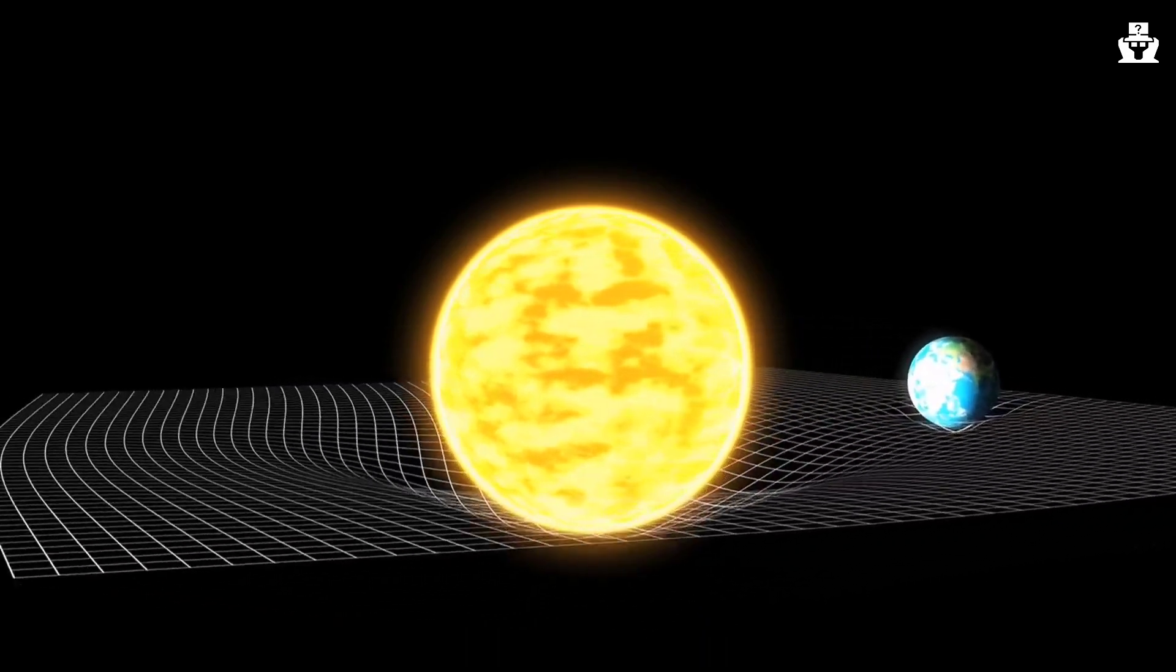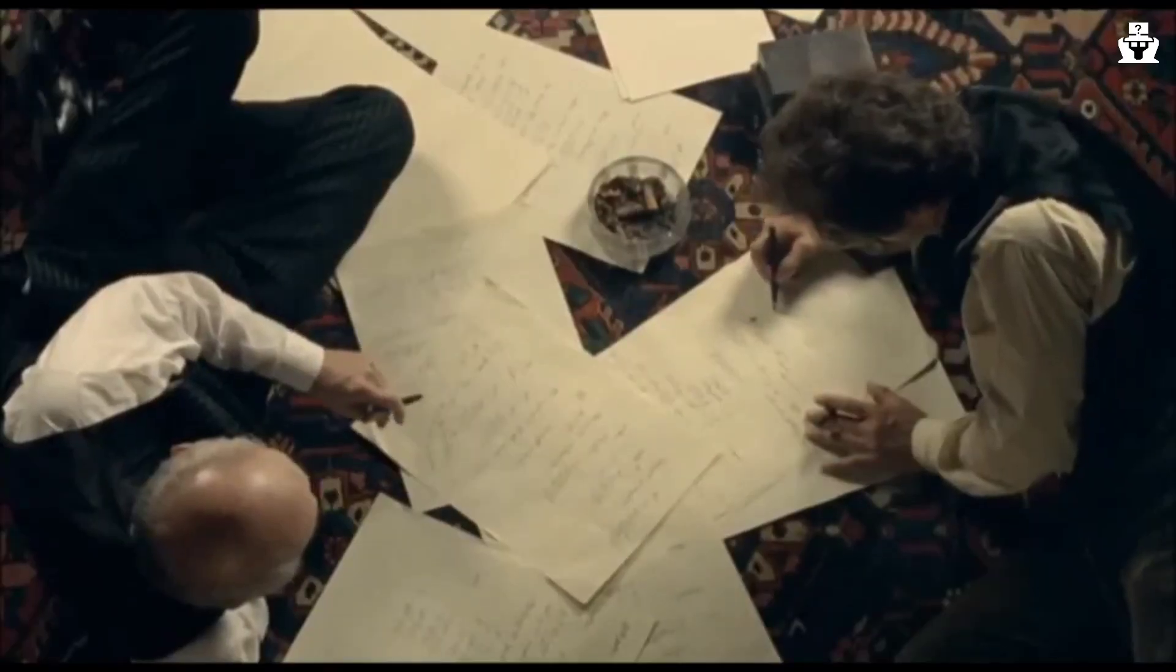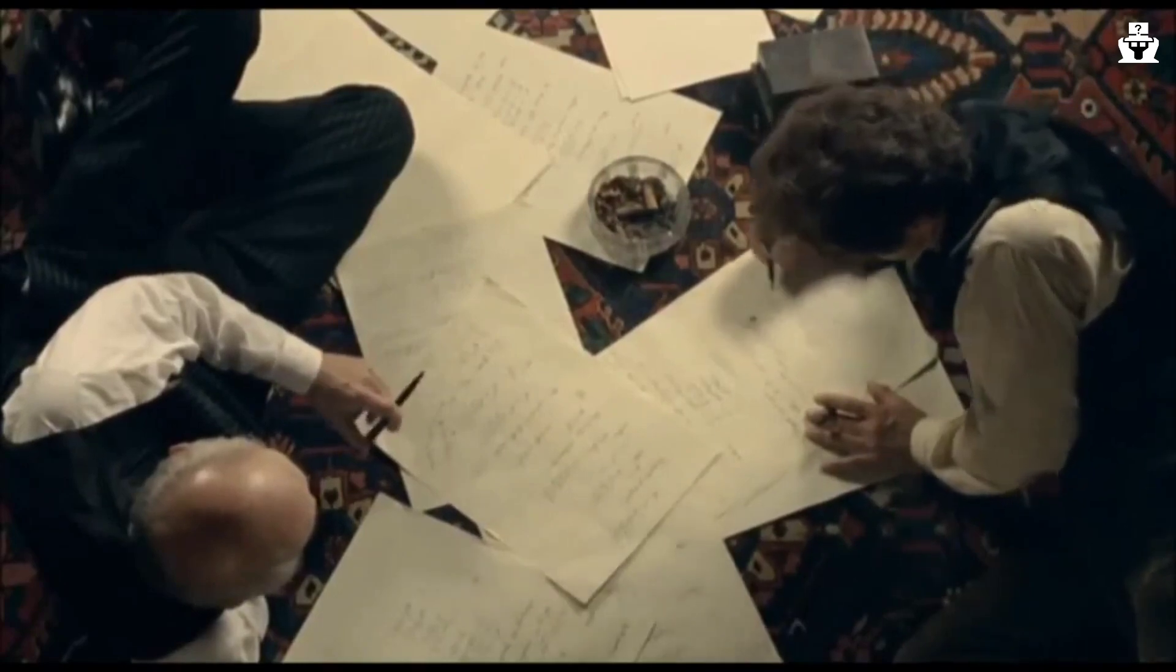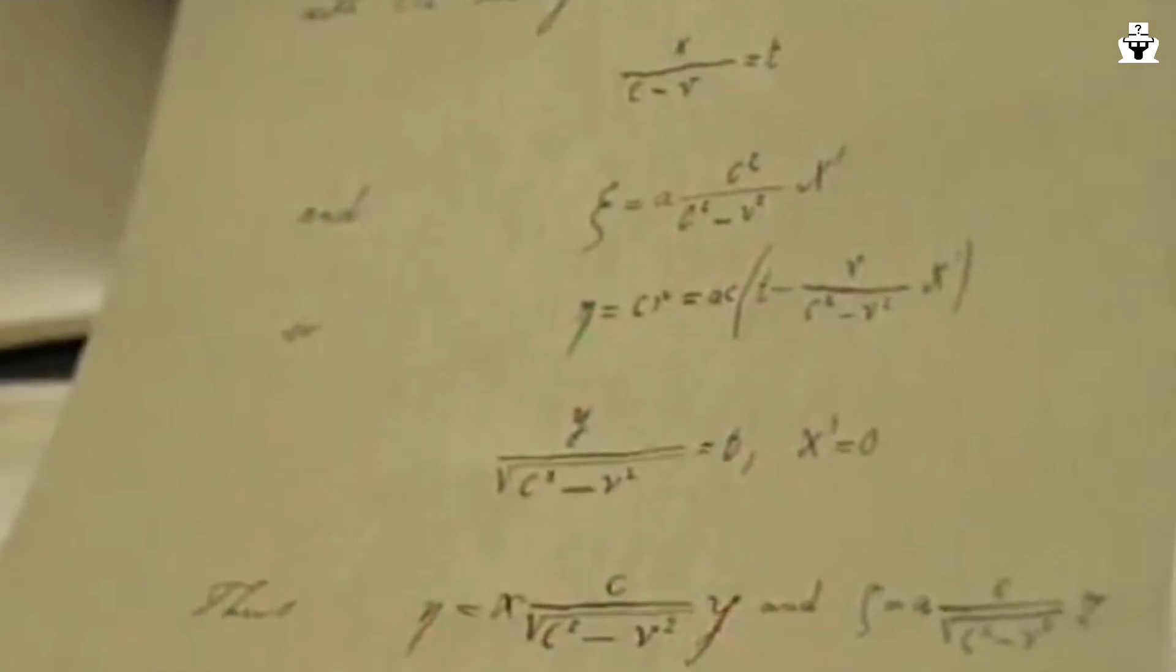However, it was not immediately accepted by the scientific community. Eddington was one of the few astronomers who was interested in Einstein's theory of general relativity. He saw its potential and recognized the need for empirical evidence to support it.